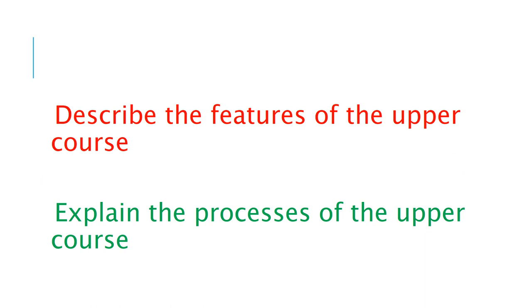So what I hope you'd be able to do from this PowerPoint is describe the features of the upper course of the river. You should be able to describe what a v-shaped valley is and a waterfall, and explain the processes at play. You should be able to explain how a v-shaped valley and a waterfall has been created, and you should be able to explain how erosion works in the upper course of a river. I hope you find it helpful. Again, any questions, please ask your class teacher. Thank you very much.